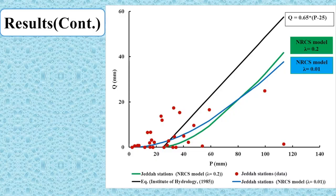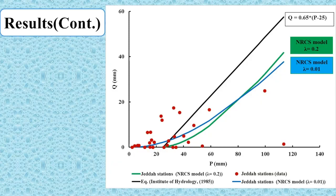Focusing on the Jeddah region alone, we compare CN at lambda = 0.2 versus lambda = 0.01. We find different fits for different shapes, but the fit for lambda = 0.01 appears somewhat better. There is also a 1985 Institute of Hydrology study that applied a linear fit to the data, but this linear representation seems to not be a good representation of the basin characteristics.